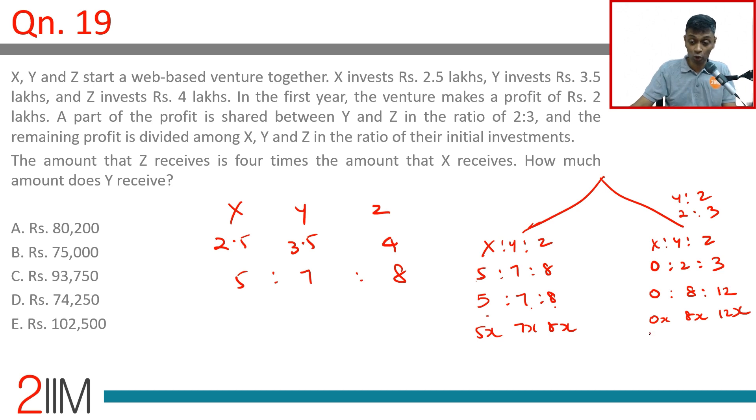Y receive? So at an overall level, adding both together, X receives 5x, Y receives 15x, Z receives 20x out of a total of 40x. What is the share of Y? 15 by 40, gets 15 by